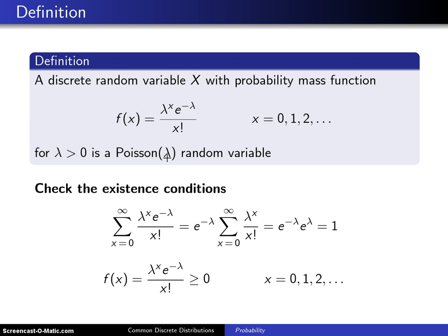Now the next thing that might be of interest is to check the two existence conditions. You know that all probability mass functions have to sum to 1 and have to be greater than or equal to 0. So let's start with summing to 1.